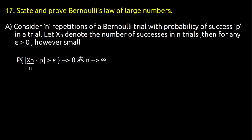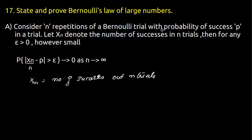XN is the number of successes out of n trials — that is why we are in Bernoulli's trials, it is the number of successes and failures. In the statement, XN will follow a binomial distribution with parameters n (the number of repetitions) and probability of success p. So XN is a binomial random variable.